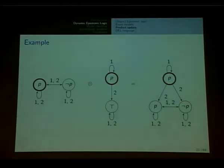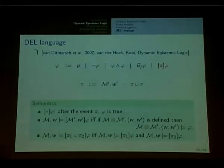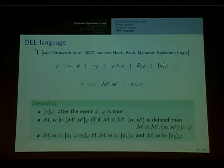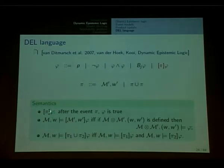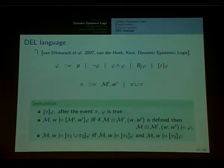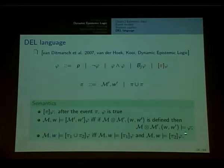Here is the example. We have the initial model. The event shows the ball only to agent one. When we make the product, we obtain a model where agent one knows the ball is inside, but agent two doesn't know — for him there are two possible worlds. The language we deal with includes epistemic modal logic plus a dynamic operator. Programs pi are either atomic event models or unions of programs. The truth condition for an atomic program: it is true if the product is well defined and this product satisfies phi.